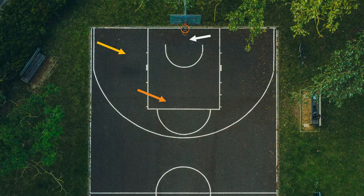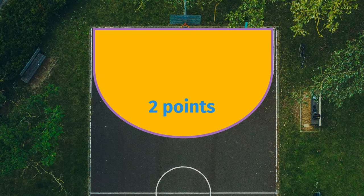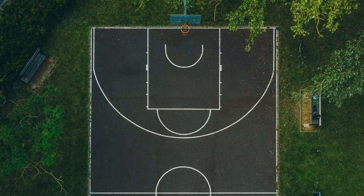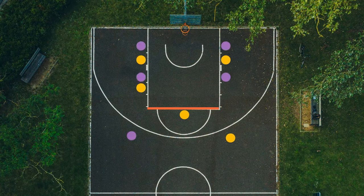If you shoot the ball from here, here, here, here, or here, it's worth two points. Shoot it with both feet behind the three-point line and it's worth three points. If you get fouled, you get a free shot — or a free throw — from behind the free throw line. The other players stand nearby and fight over the ball if you miss. Make the free throw basket and your team gets one point.